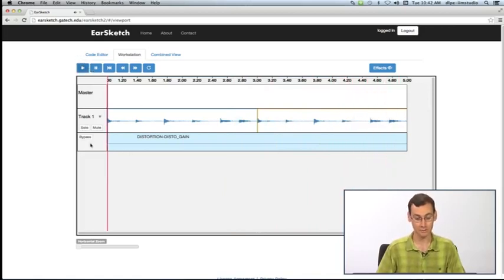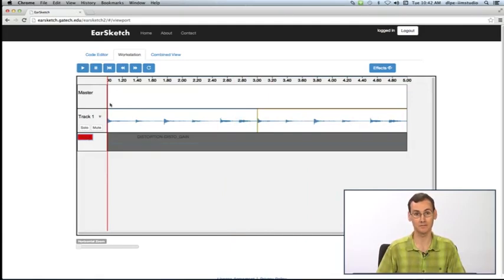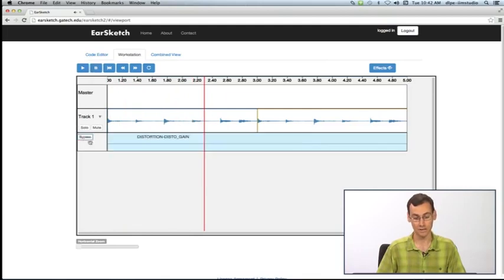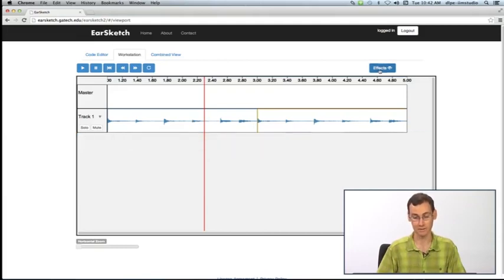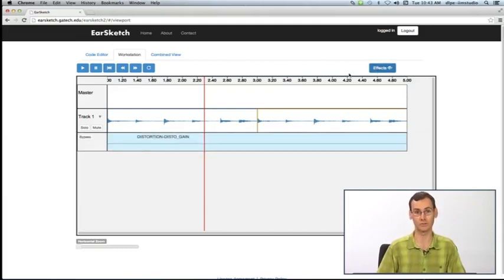A couple other things are available to you. I can hit the bypass button if I want to listen to this without the effect. And also, if my effects lanes are starting to take up too much space in my DAW and I just want to hide them temporarily, I can hit this effects button up here. That will hide them. If I hit it again, it shows them again.